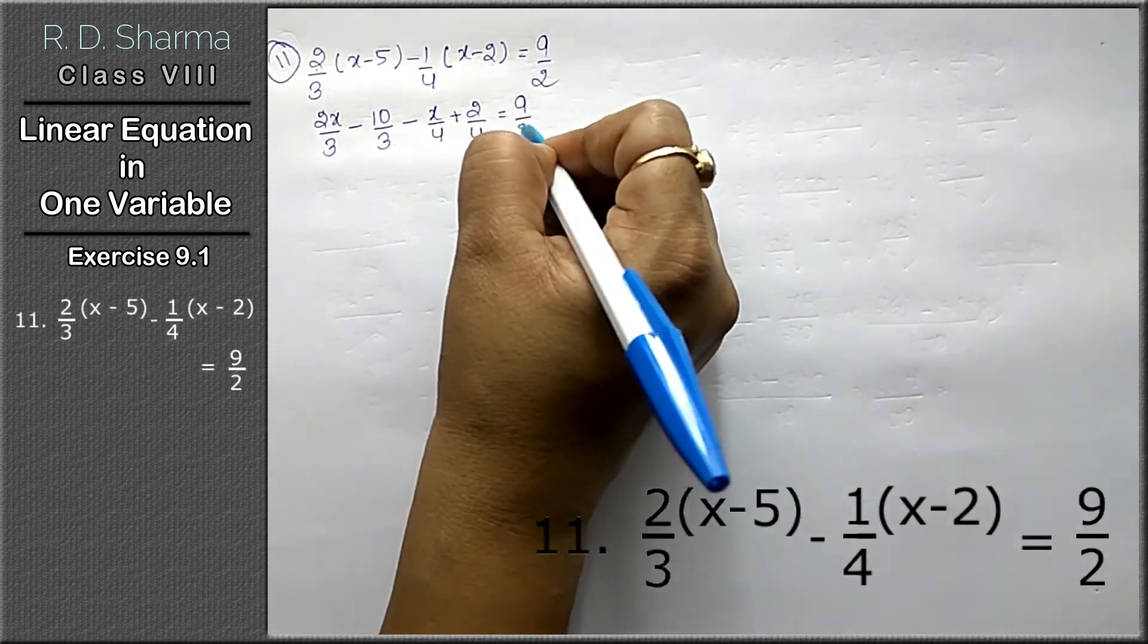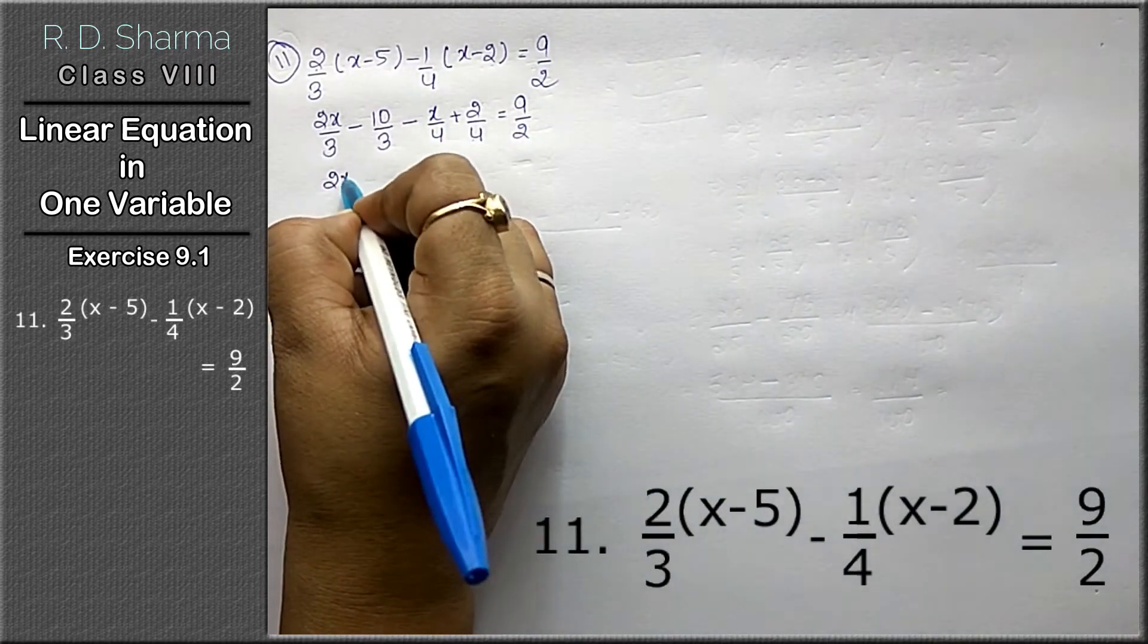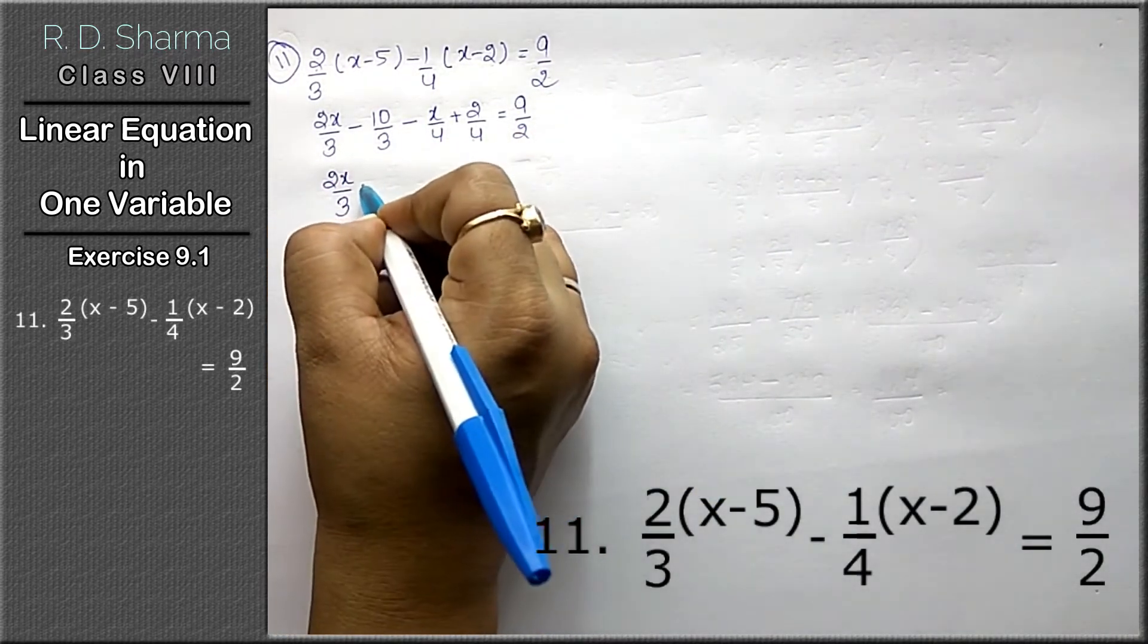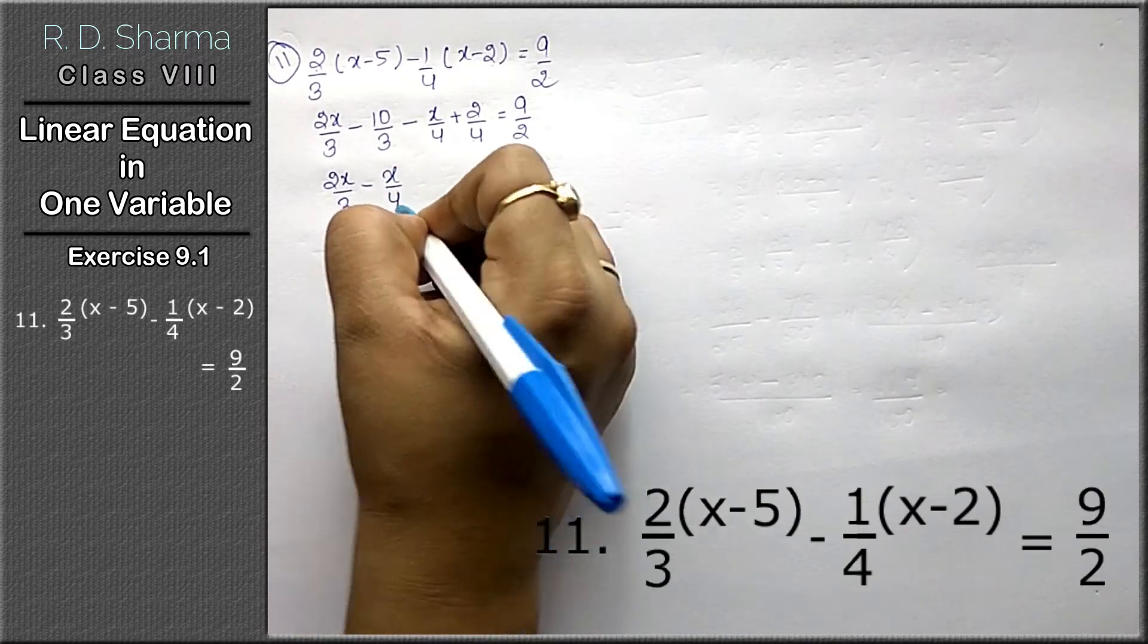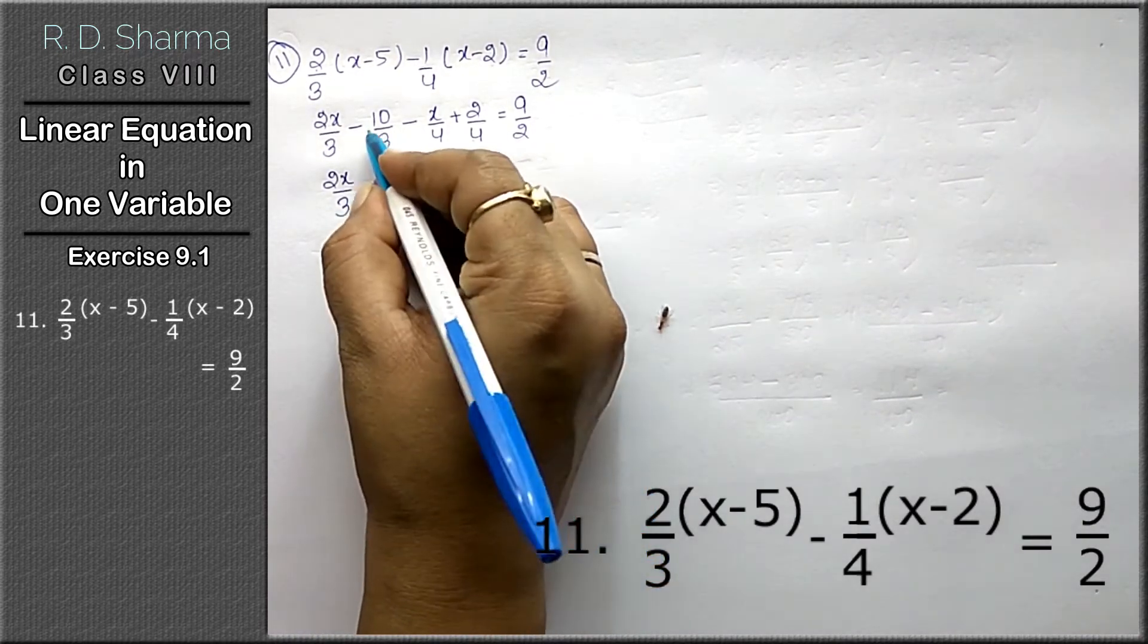We can simplify this again. x's terms will be on this side. 2x upon 3 minus x upon 4 equals to non-x's terms.